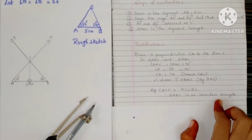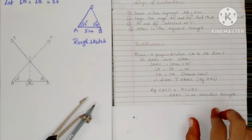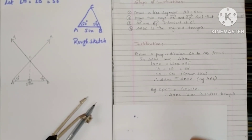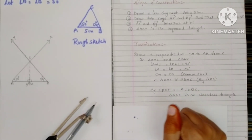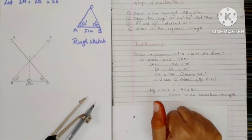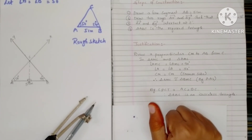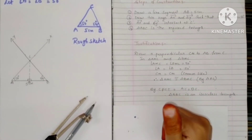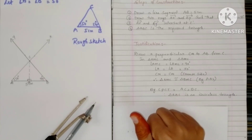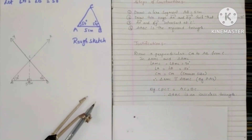So in this way we can justify this construction. Students, these are problems 3 and 4 in Exercise 13.1. Please like this video, share it with your friends, and subscribe to my channel. Thank you for watching.